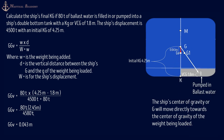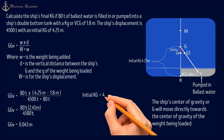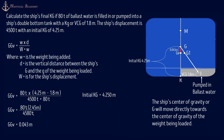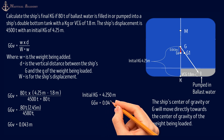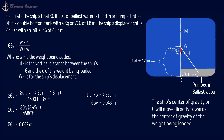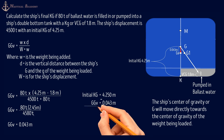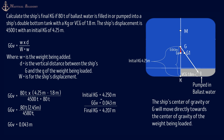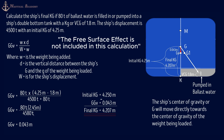To find the final KG: initial KG is 4.250 meters. Since the direction of the shift of G is downward, the effect is a decrease in KG, so we subtract the GGv of 0.043 meters. Our final KG is 4.207 meters. To find the weight of the ballast water inside the tank, use the ship's sounding table provided onboard. Note that the free surface effect of the ballast water is not included in this calculation; a separate video will cover how to find the free surface effect to determine fluid KG and fluid GM.